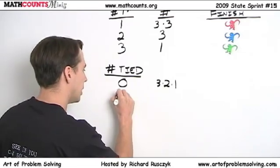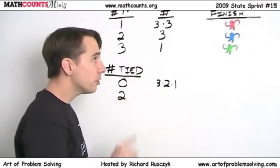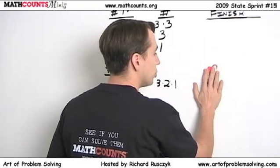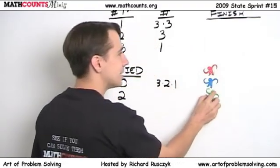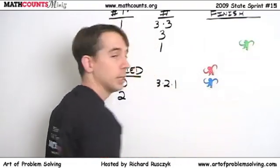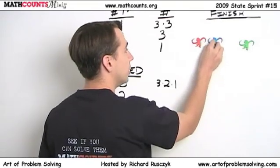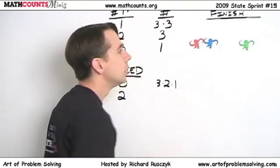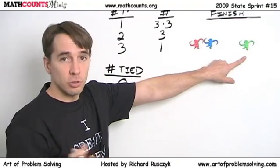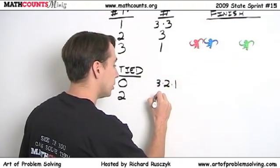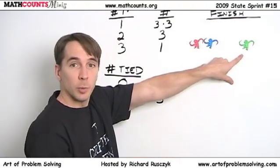But what happens if two of us are tied? Well, first, we have the three people. We have to choose one of the three people to not be tied. And then we take these other two people, and these other two people are indeed tied. So we have three ways to choose the person who's all by themselves.